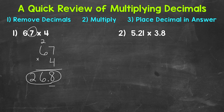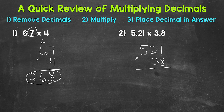Let's move on to number 2 where we have 5 and 21 hundredths times 3 and 8 tenths. So let's remove the decimals and rewrite this problem as 521 times 38. Now we're ready to multiply. So 8 times 1 is 8. 8 times 2 is 16 — put our 6, carry the 1. And then 8 times 5 is 40, plus that 1 is 41.